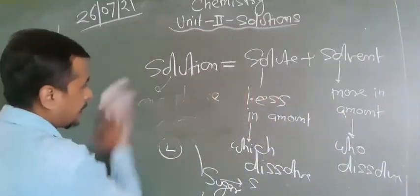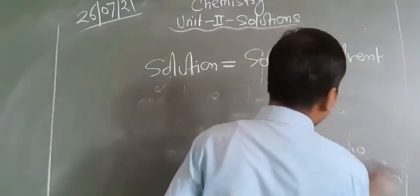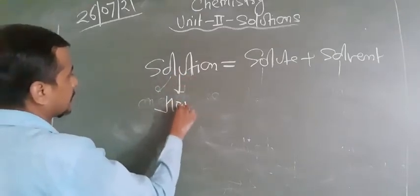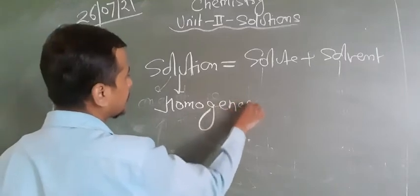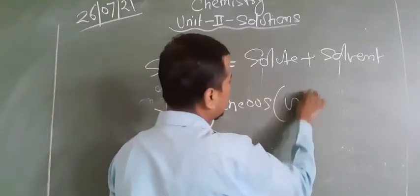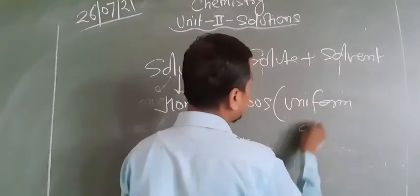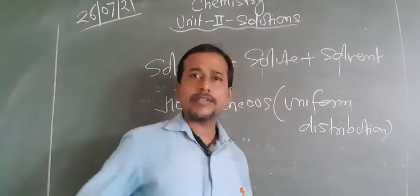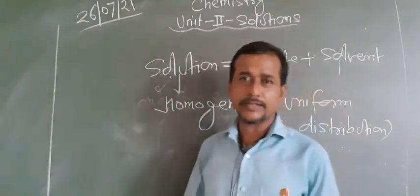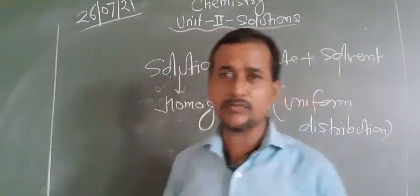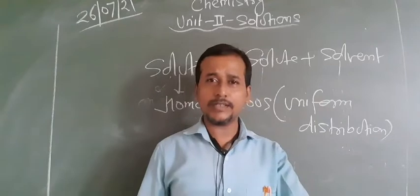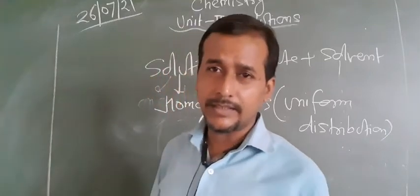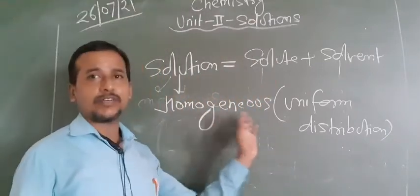Now, one more thing we have to know: solution is basically homogeneous, meaning it has a uniform distribution of solute. For example, take one glass of water and add some sugar to it. After some time, once all the sugar is mixed and the solution is formed, every sip, every drop of water has the same taste. That's why we say this is homogeneous.